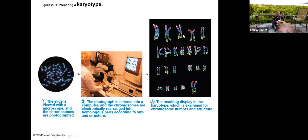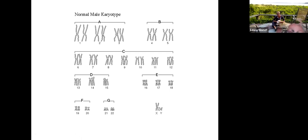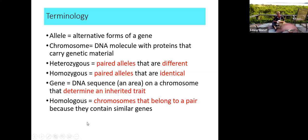Here is a normal male karyotype. We have 23 pairs, and in the lower right-hand corner is the 23rd pair that determines gender. If you inherit an X from one parent and a Y from the other — the Y has to come from dad — that determines the gender of male. The term heterozygous means when you have a pair of alleles that are different — for example, pair 23 in a male: X and Y are two different alleles. Homozygous means the paired alleles are identical to one another.